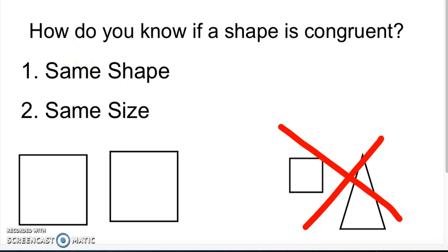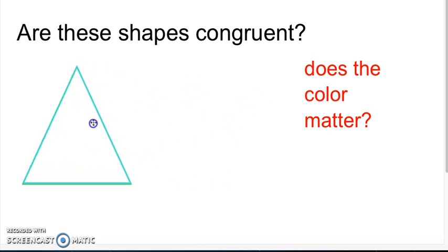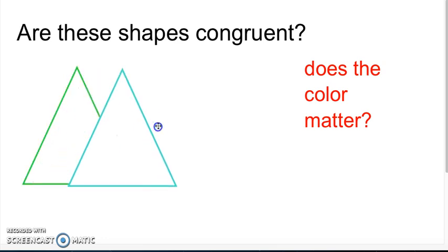Let's test out our skills. Are these shapes congruent? Well, I can see that they are both triangles because they have three sides, but I'm not sure if they're the same size. So I'm going to drag one on top of the other to check the side lengths. And indeed they are — these two triangles are congruent because they're both triangles and they are the same size.